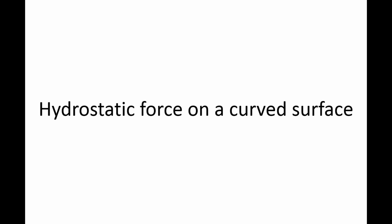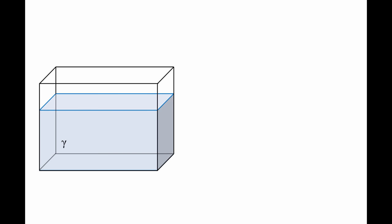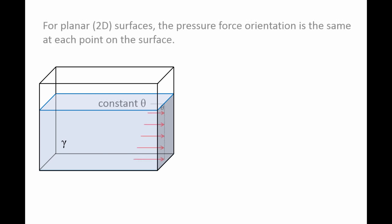In this lesson, we will discuss how to determine the hydrostatic force on a curved surface. Here we have a rectangular tank of liquid with specific weight gamma. The side walls of the tank consist of flat plane surfaces. Let's examine the pressure force along the right wall. Although the pressure force increases with depth along the wall, notice that it always points in the same direction — toward the right — because the pressure force acts normal to the wall and the wall does not change its orientation relative to the free surface.